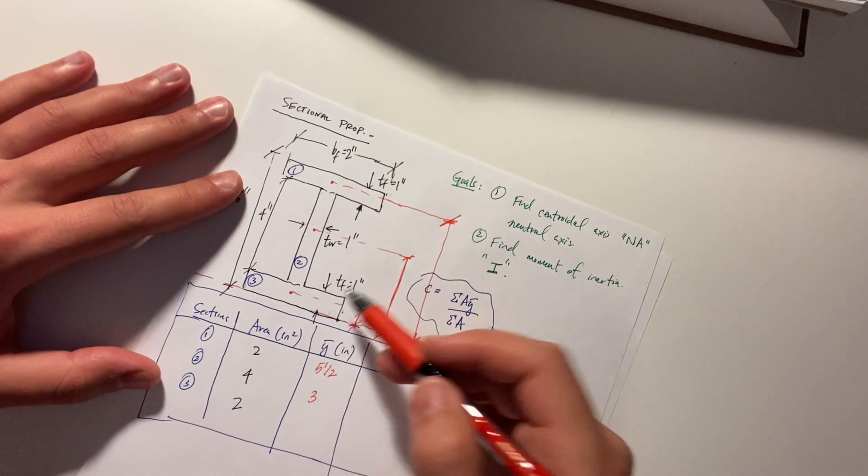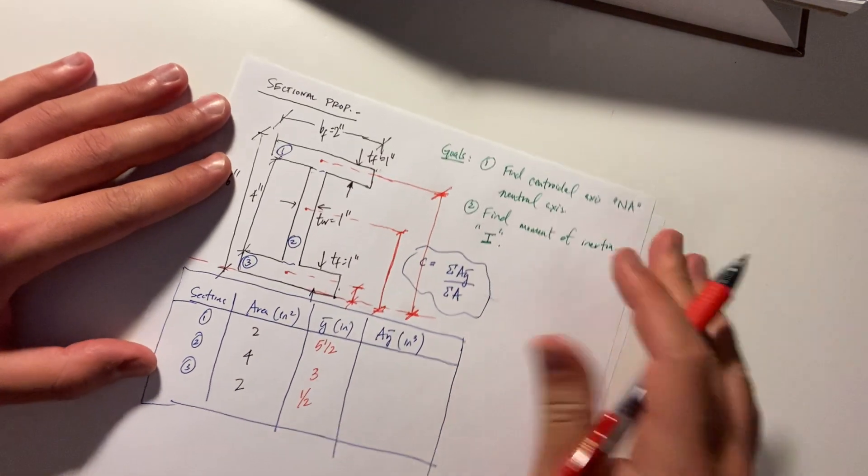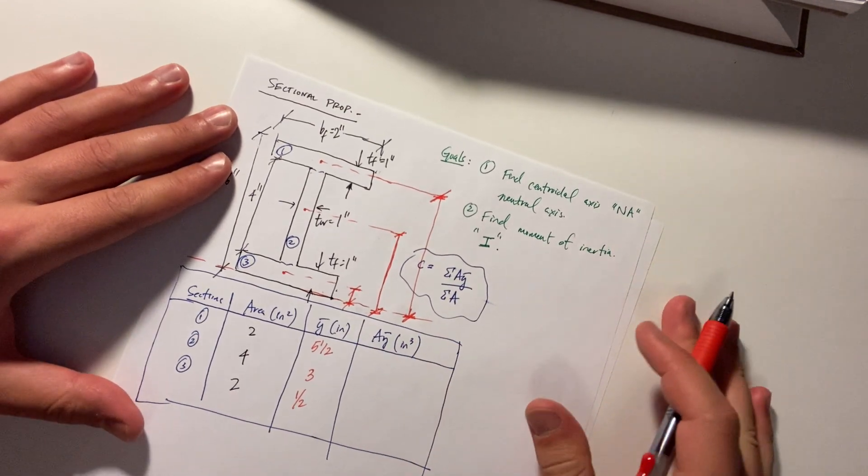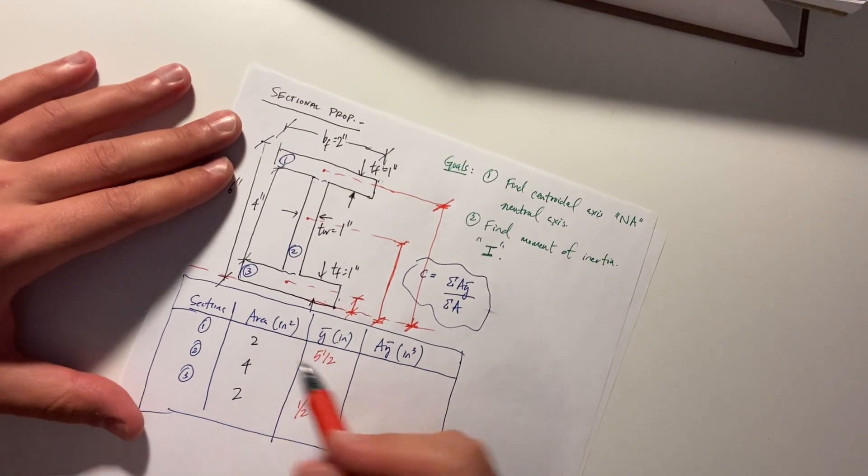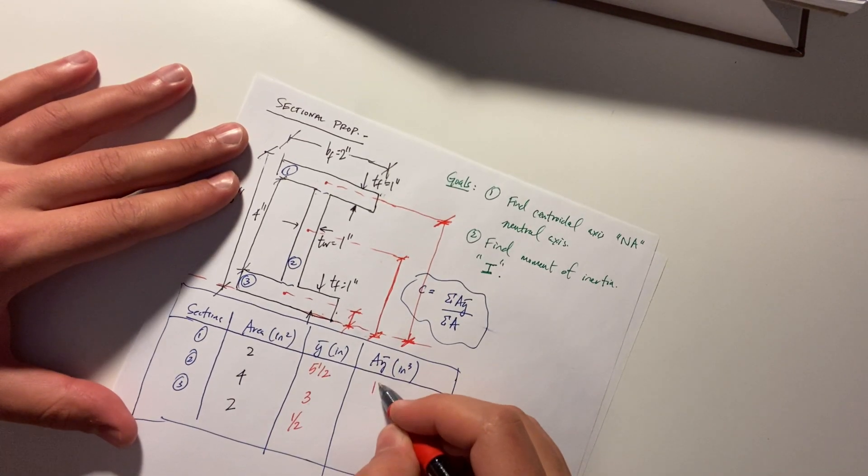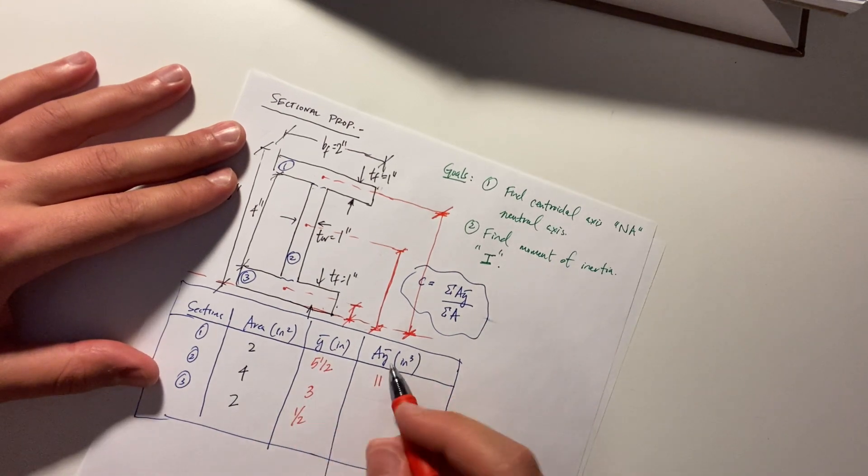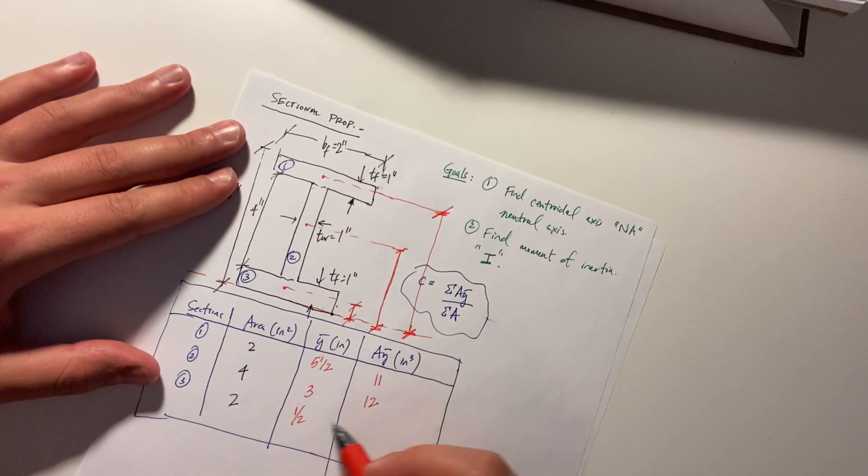Section three, what's that? Well, it's just half of that. So, it's just a half, right? Inches. Let's multiply these together. Five and a half and two, 11. Three and four is 12. That's one. One.